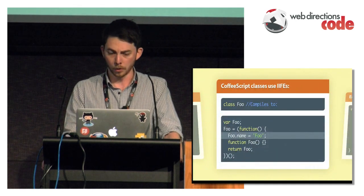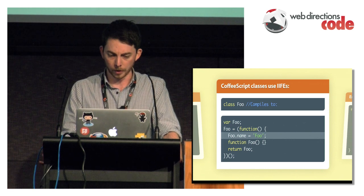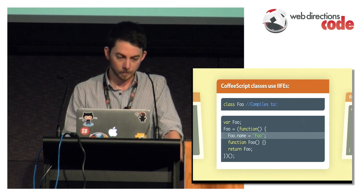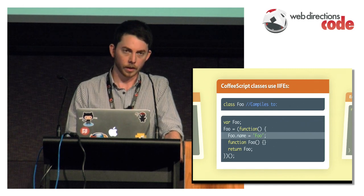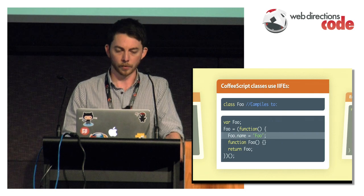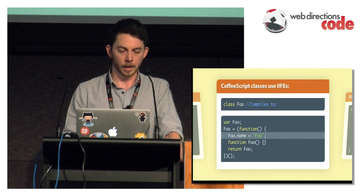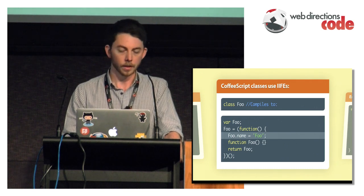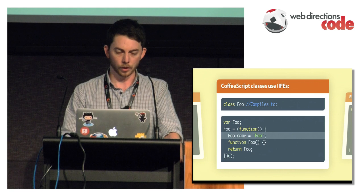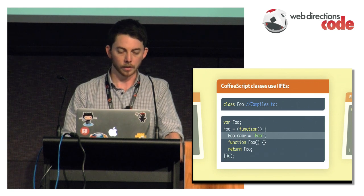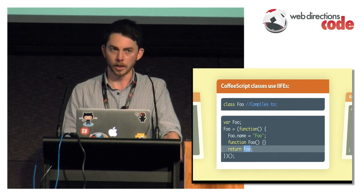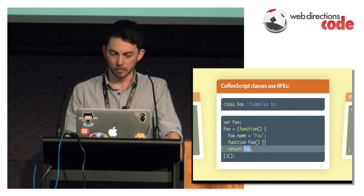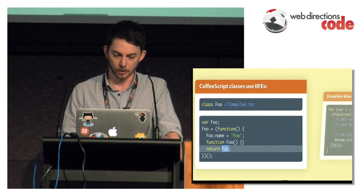CoffeeScript, for those of you who hate curly braces and semicolons, does this for you. When you write class foo in CoffeeScript, that one line compiles to an IIFE that attaches things to it and returns the value at the end. This allows complex things like inheritance to happen within that IIFE.